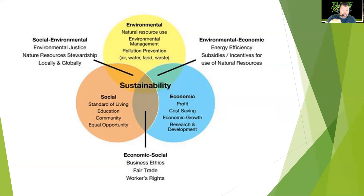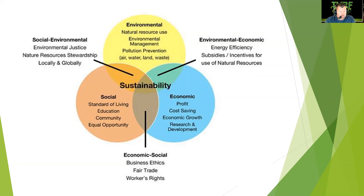You can intertwine all these, starting with environmental, economic, energy efficiency, subsidies, incentives for use of natural resources, social and environmental justice, natural resource stewardship locally and globally. We are stewards of the land being in the green industry — we must take care of our environment and the planet. And economic-social: business ethics, fair trade, and workers' rights. We can't put employees in danger doing anything sustainable; we can't hurt our employees.